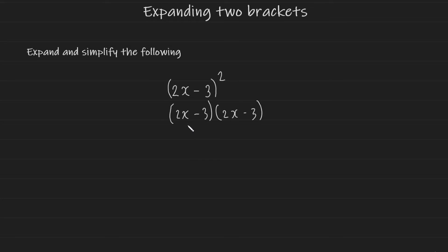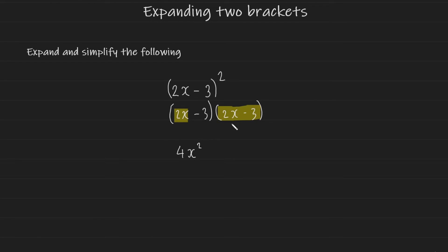So let's go ahead and solve this like we've done in the previous example. We're going to have 2x multiplied by everything in the second bracket. This is going to give us 2x multiplied by 2x, which is 4x squared. Then we're going to have 2x multiplied by negative 3, which is negative 6x.